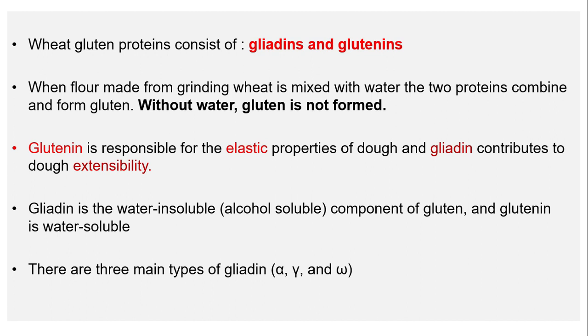Gliadin is the water-insoluble but alcohol-soluble component of gluten, while glutenin is water-soluble. There are three main types of gliadin: alpha, gamma, and omega.